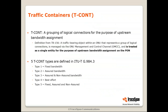Let's get familiar with some terms of G-PON. The first one is TCON, traffic container. A traffic container is a grouping of logical connections for the purpose of upstream bandwidth assignment. The Broadband Forum recommendation TR-156 defines it as a traffic-bearing object within an ONU that represents a group of logical connections. Importantly, it is treated as a single entity for upstream bandwidth assignment. Since bandwidth is assigned by the OLT to a TCON, this is the element associated with quality of service. The G-PON standard ITU-T G.984.3 defines five types of TCONs, allowing the OLT to manage bandwidth for different quality of service types.